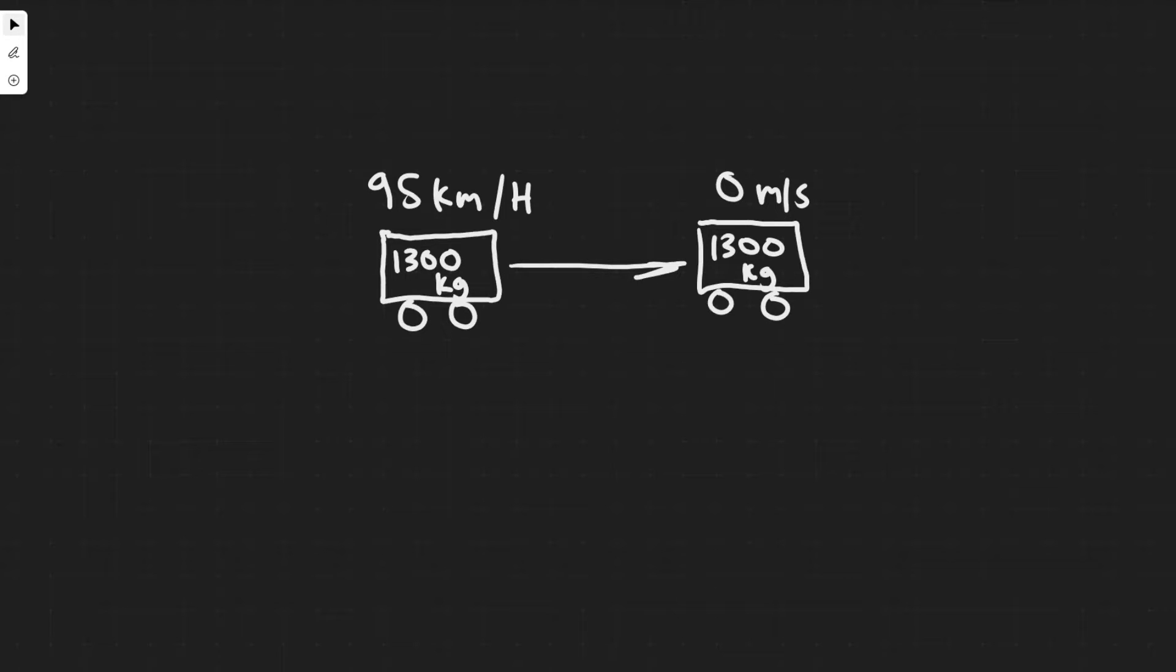So in this problem, we're told how much work must be done to stop a 1300 kilogram car traveling at 95 kilometers per hour.